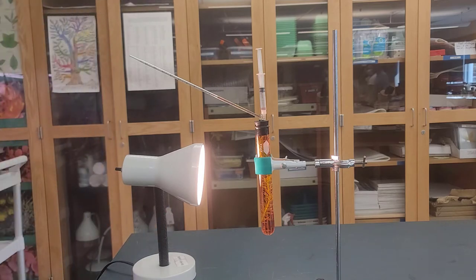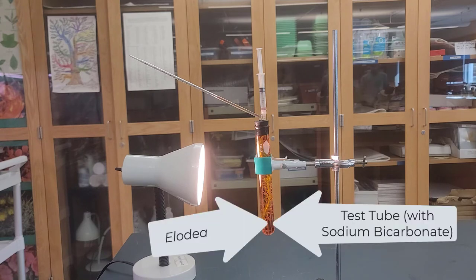This is trial number one. So this is our basic setup. We have a test tube with a plant Elodia on the inside and we have inside that test tube surrounding our Elodia a solution that is sort of pink in color called sodium bicarbonate.